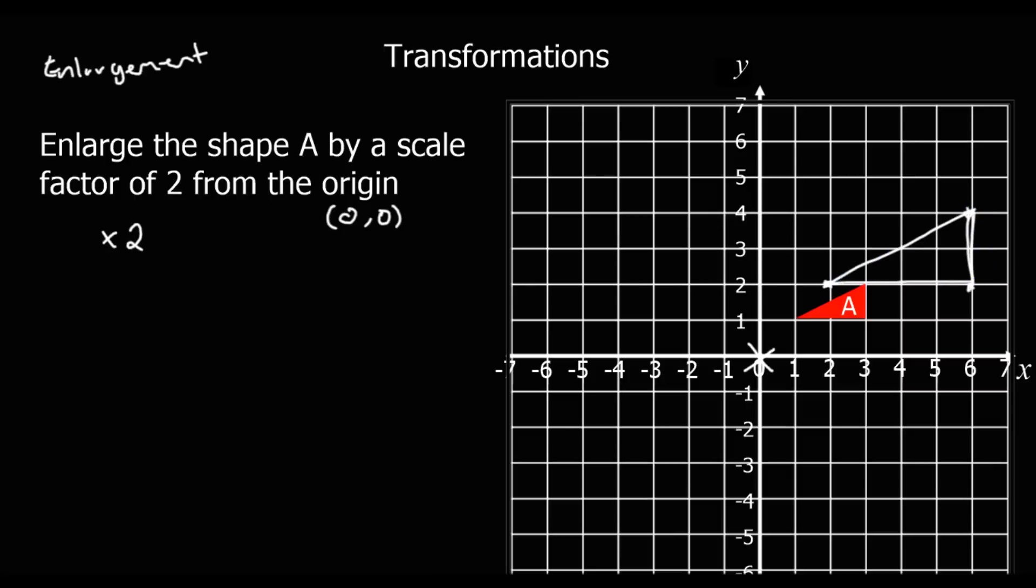A good way of checking whether you've done this correctly is to extend lines from the origin through each shape. If I drew a line through both shapes, so that's the bottom point on each shape, through the other bottom point on each shape, and through that top point on each shape, you should see they all go through the origin. So from the origin, I can draw a line that connects the same point on each of the two shapes. So that way I know I've done it correctly.